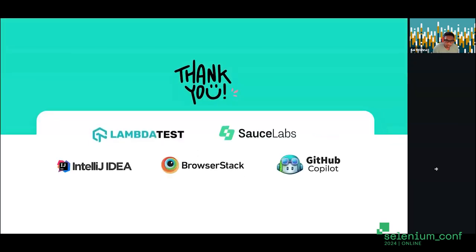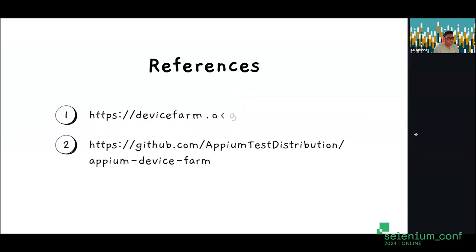Before we close, we want to thank Lambda Test, Source Labs, BrowserStack, GitHub Copilot, and Applitools for supporting what we're doing through community contributions and open source — either giving us full access to their cloud services, giving early access to their labs, or supporting community contributions. A special shout out to Lambda Test, who are also our GitHub sponsors. The reference links are available: detailed documentation at devicefarm.org, and the repo URL for implementation details.